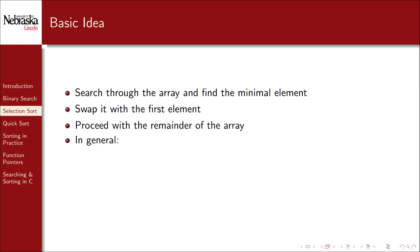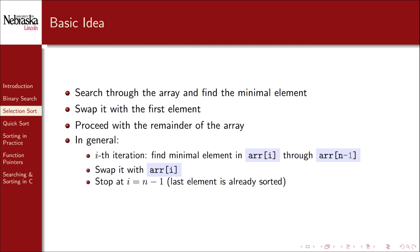In general, on the i-th iteration, we search through the elements from index i up to n minus 1 to find the minimal element among them. We then swap it with the i-th element. We stop when i is equal to n minus 1, because having sorted the first n minus 1 elements, the last element is where it needs to be.